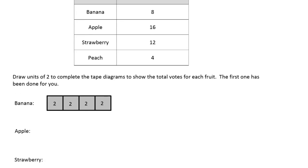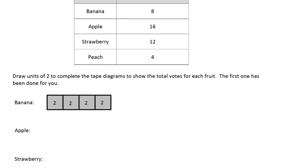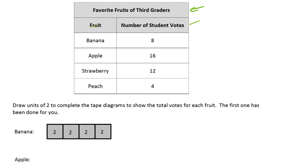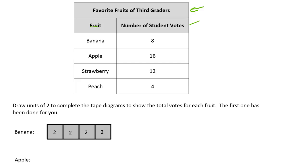Draw units of two to complete the tape diagrams to show the total votes for each fruit. The first one's been done for you. Units of two - you can see this is what we're talking about. That's a unit of two right there. There's eight banana votes, so that's two, four, six, eight, and that's all you need.